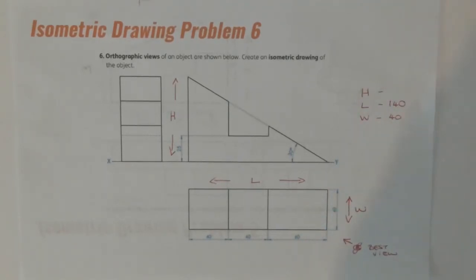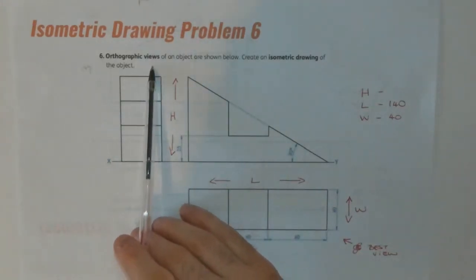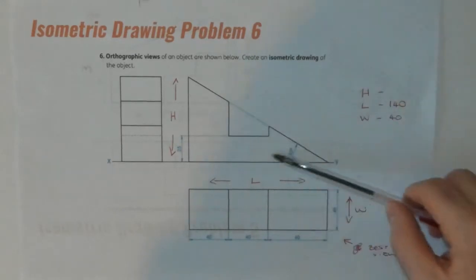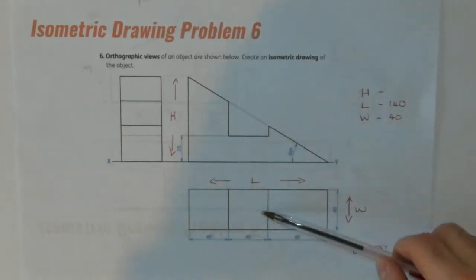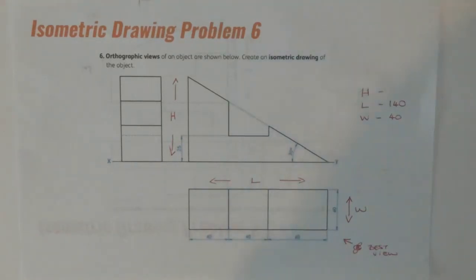We've covered some other questions based on this in previous videos. What we're doing here is we're given orthographic views of an object shown below and we have to create the 3D drawing of it given the 2D views. We have an elevation view, the plan view underneath it, and the end elevation. What I always get my students to do is work out the overall height, length, and width so that we can create our crow's foot and our fish tank for the object to fit inside.